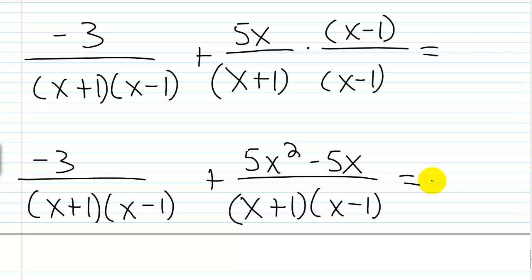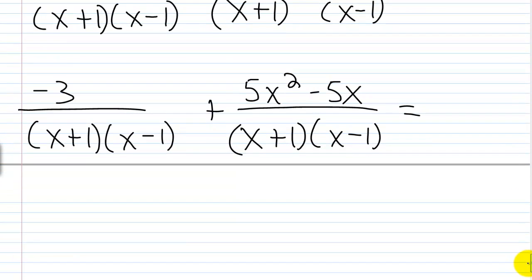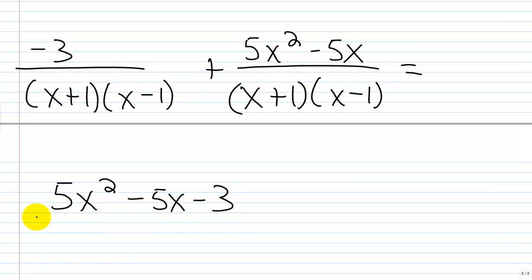So now we just want to combine like terms for the numerators here. Basically, we're going to have a negative 3 that's going to go on the end of this guy. So we'll have 5x squared minus 5x minus 3 over x plus 1 times x minus 1.